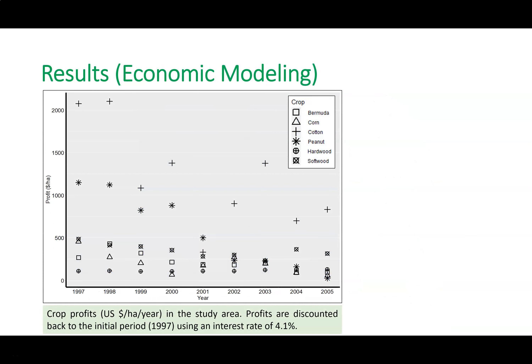These are the results for economic modeling. How much money you make from each crop type depends on yields — which depend on climate, rainfall, and management practices — and also on commodity prices for a particular year. We incorporated all that dynamics to figure out earnings depending on land use decisions over space and time. These numbers decrease over time because we use discounted values to express everything in net present value at the start of the modeling period.